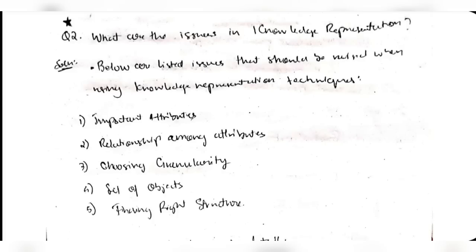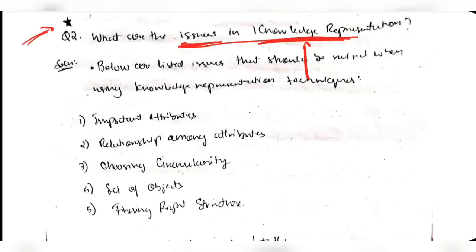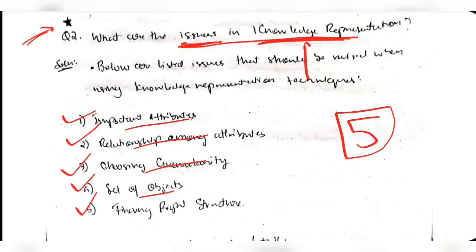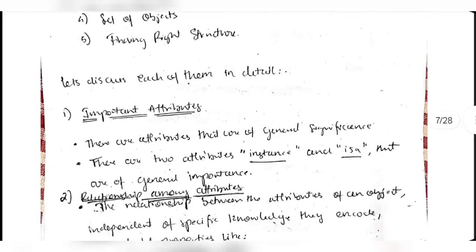The next super important question is: what are the issues in knowledge representation? While representing knowledge, five problems arise. We'll be discussing what these terms mean and what you are supposed to write in the exam if this question comes.